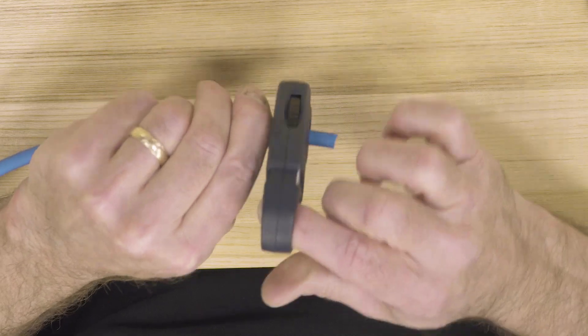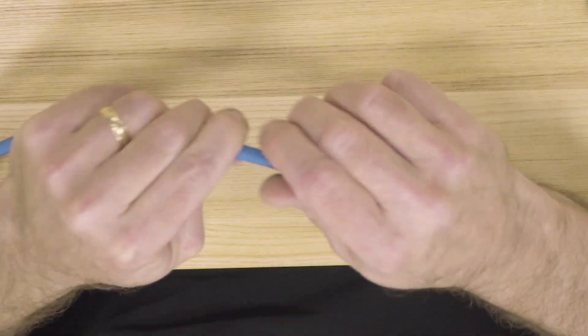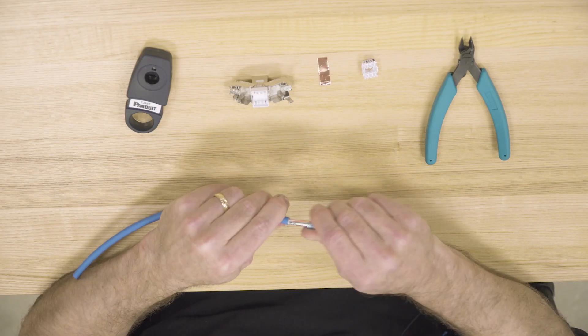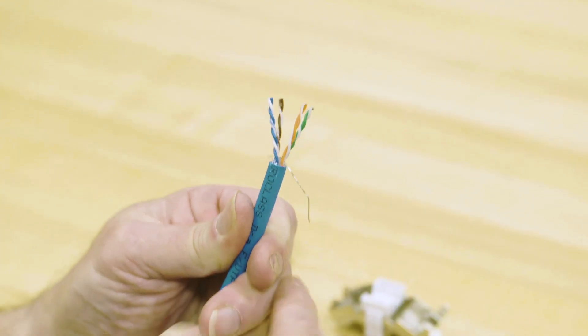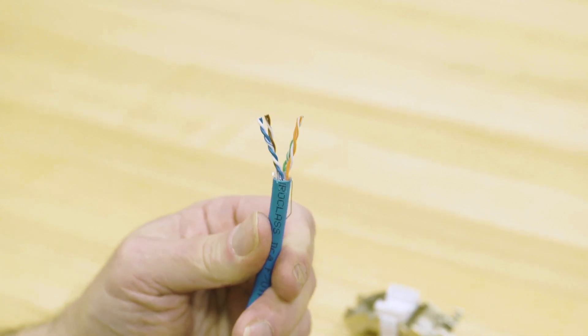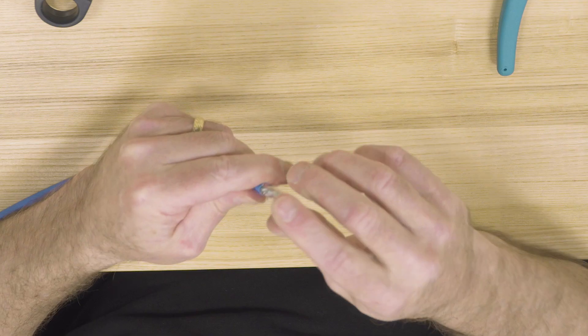Strip off about an inch to inch and a half of the jacket. Remove the foil to find the drain wire. Here's the drain wire - bend that down over the jacket.